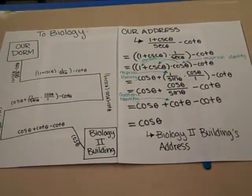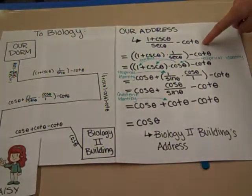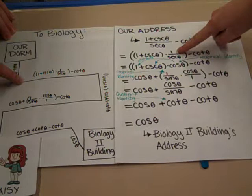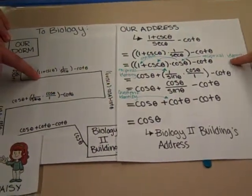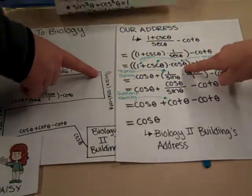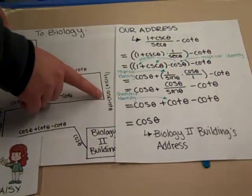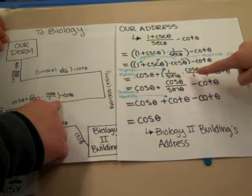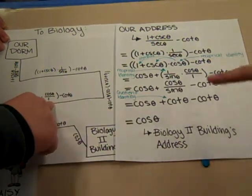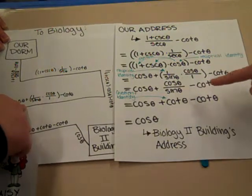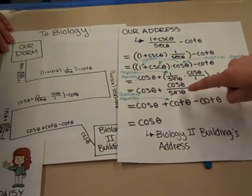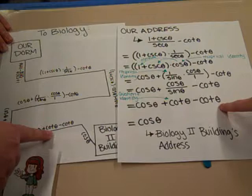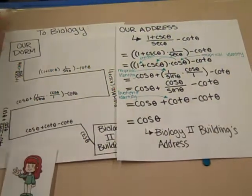Sounds good, thank you for helping me. Okay, so this is our address. We can change streets by taking secant out of the denominator, which you can multiply by the reciprocal, 1 over secant theta. According to the reciprocal identity, 1 over secant theta equals cosine theta. Then you can distribute cosine theta to 1 and cosecant theta, giving cosine theta plus (1/sin θ · cos θ/1) minus cotangent theta. Then, multiplying those two together, you get cosine theta over sine theta, which according to the quotient identity gives cotangent theta. Cotangent theta minus cotangent theta just leaves us with cosine theta, which is the Biology 2 building's address.